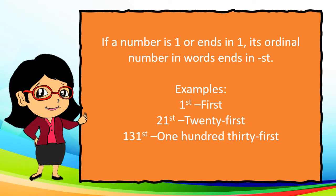If a number is 1 or ends in 1, its ordinal number in words ends in ST. For example, first — we add ST to number 1 since the last two letters of the word 'first' is ST. We also have 21st and 131st.